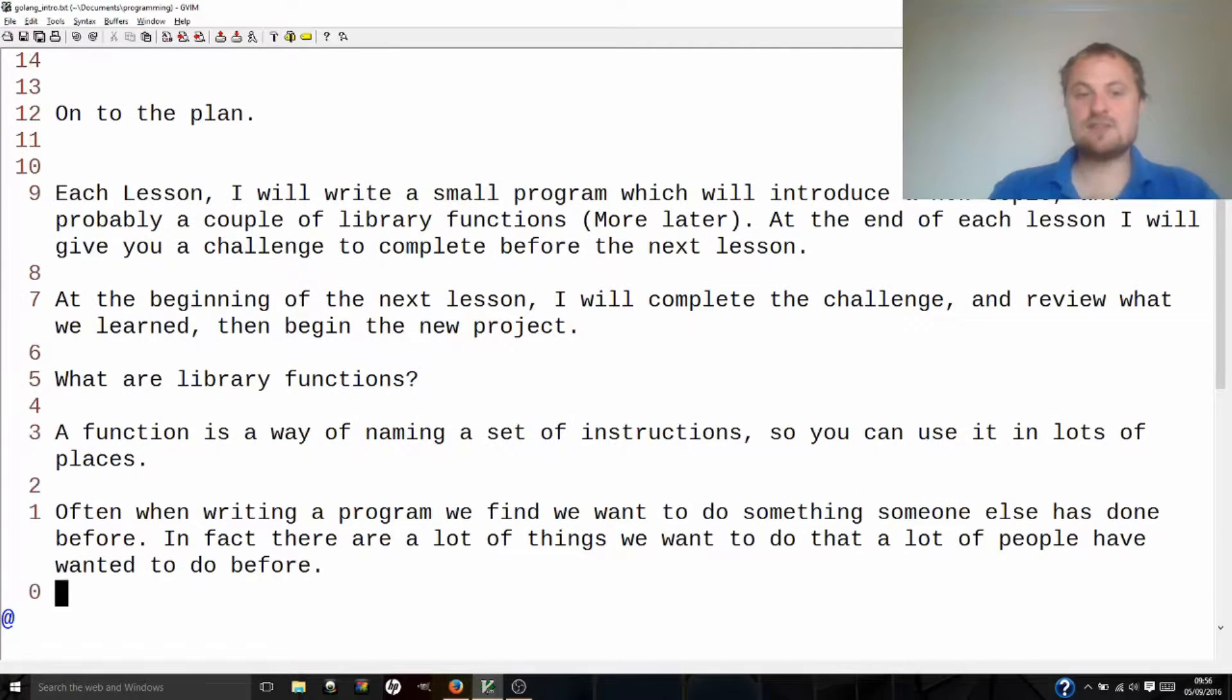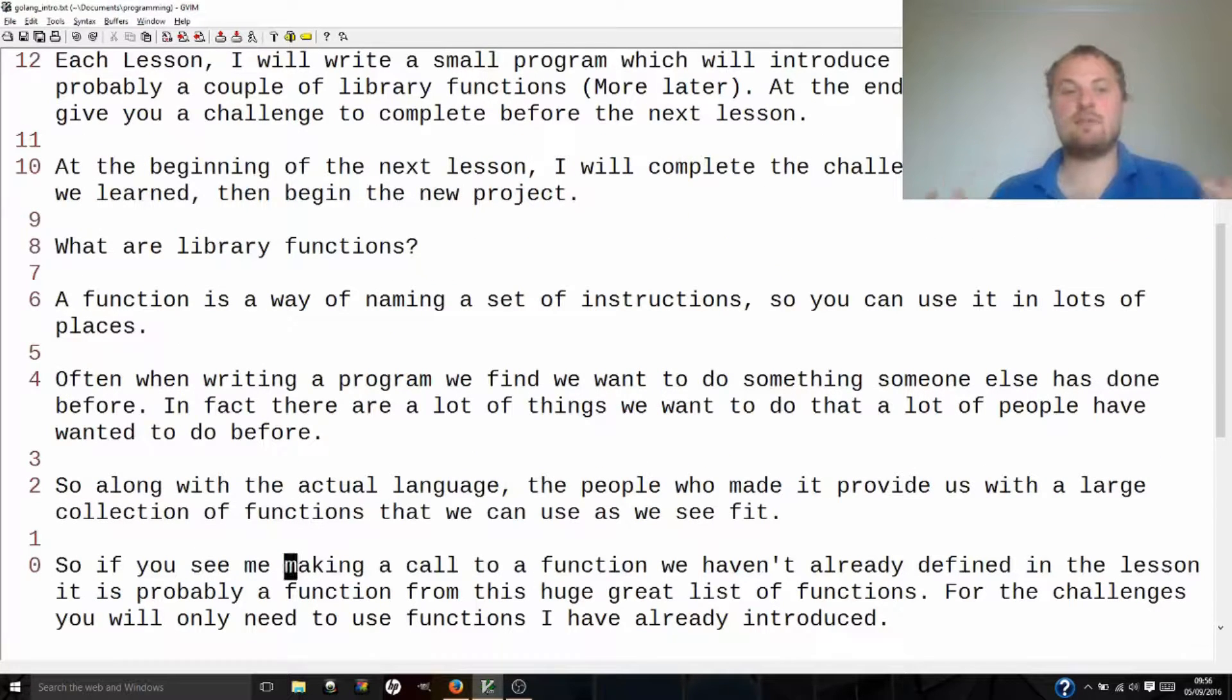So, I mentioned library functions. What are they? Well, let's start with a function. A function is a way of naming a set of instructions so that you can use it again in lots of different places. And often when we write a program, we want to do that. We want to use the same pieces of code. We don't want to keep writing the same thing again and again. So if we stick it in a function, that saves us a lot of bother.